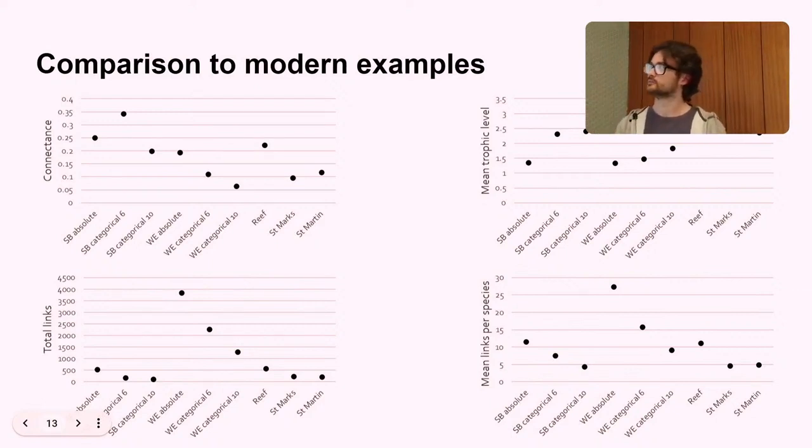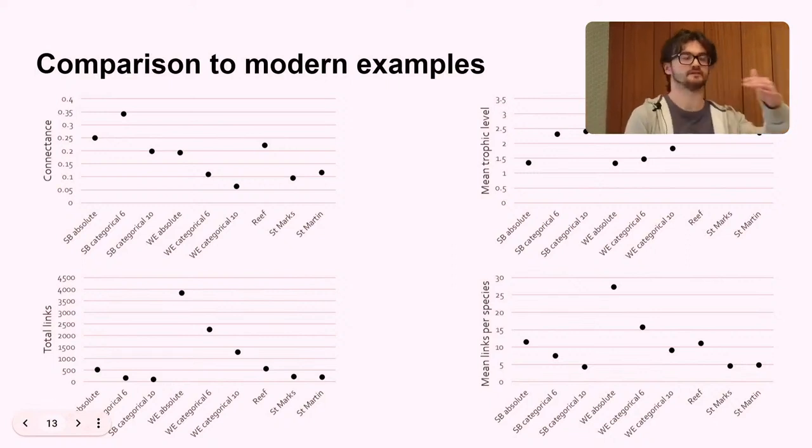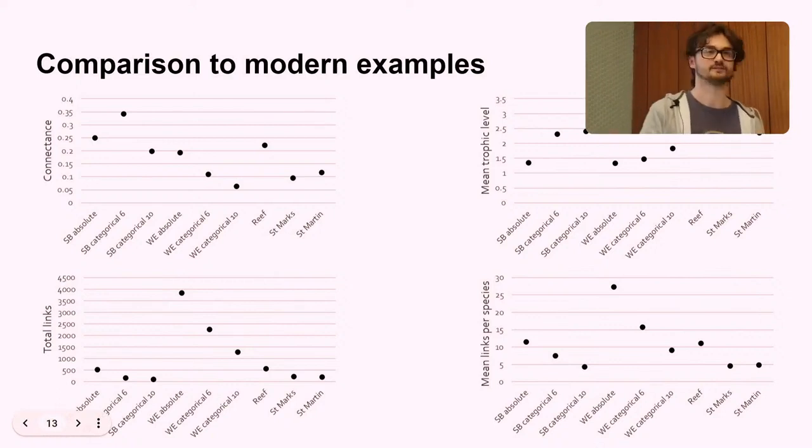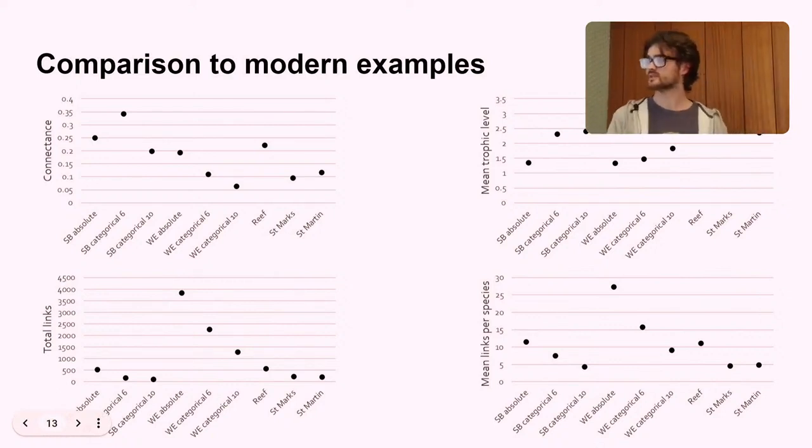Then you've got mean trophic level. That's an indicator of how many trophic levels there are in a web. And secondly, where the organisms are distributed among those trophic levels. Then you've got total links. So that's just total links. That's pretty self-explanatory. And then mean links per species. The average number of links that each species has within its web.